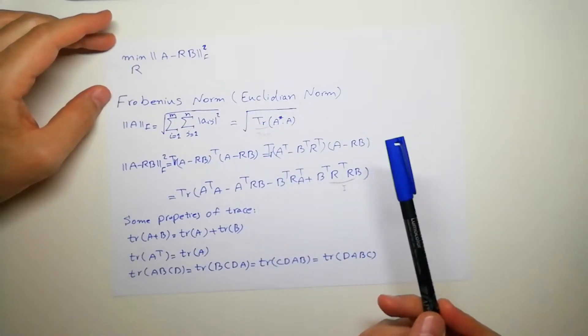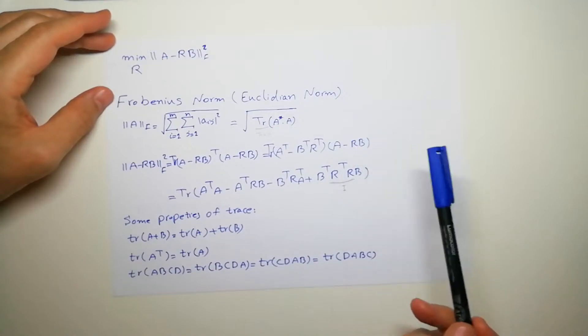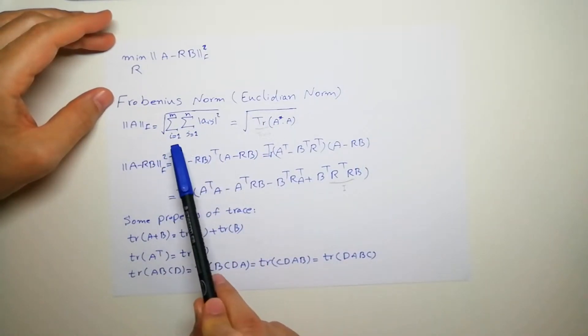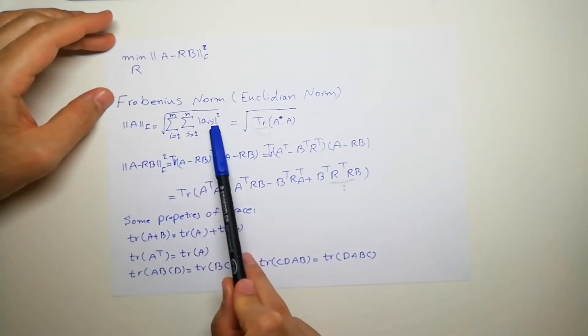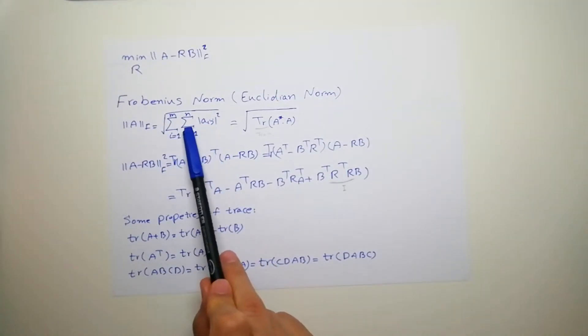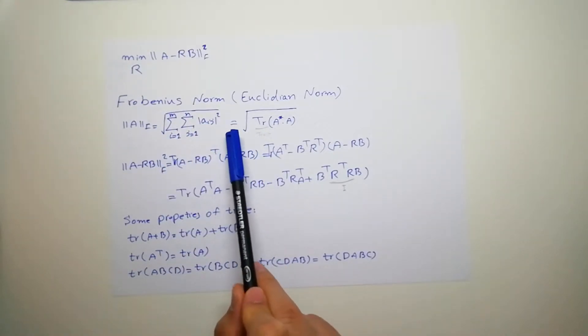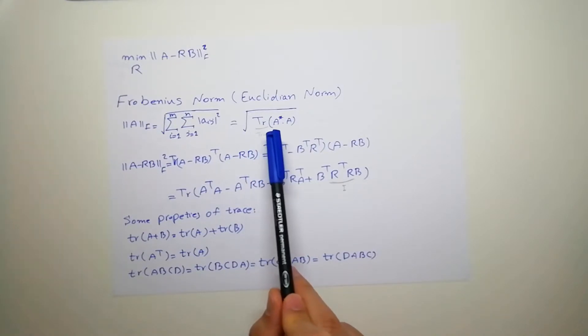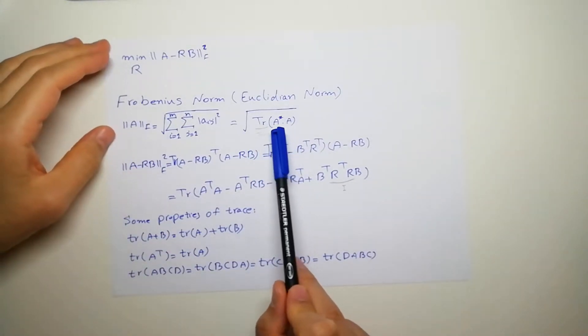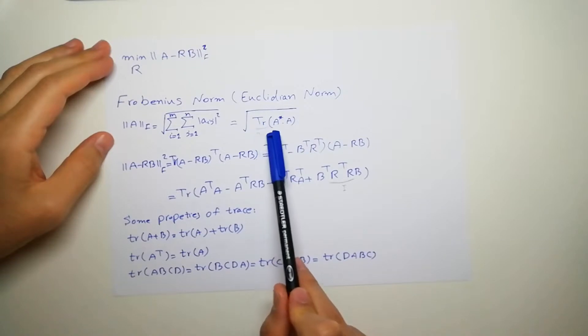So let's review Frobenius norm or Euclidean norm. For a given matrix Frobenius norm or Euclidean norm is actually making every element a square and then sum on them all and then get the second root. So sum of all elements squared and then get the second root. We can write this as a trace of conjugate transpose of a matrix multiplied by itself.